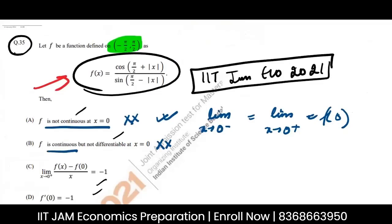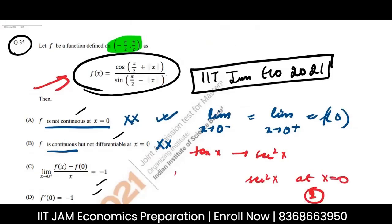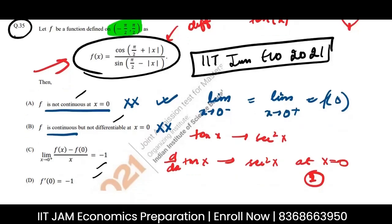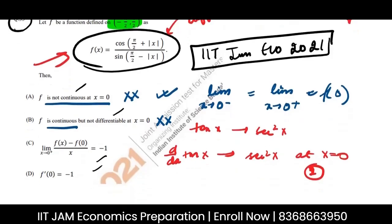The function is continuous but not differentiable at x = 0 because of the involvement of the absolute value. Had the question been without mod, the function would have been differentiable — the derivative of tan x is sec²x, and sec²(0) = 1, so differentiation would be possible. But because we have tan|x|, the kink makes it non-differentiable, meaning f'(0) does not exist. So that option is incorrect.